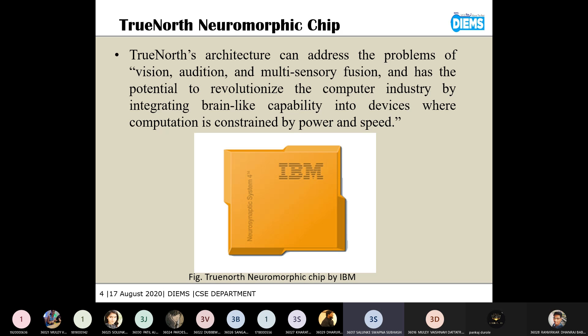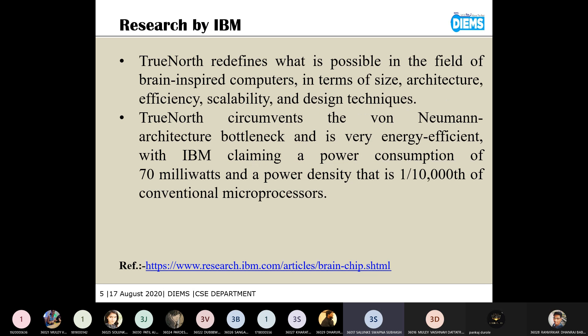Even if the data has some noise, that can also be processed very efficiently by this chip. This chip can be used for vision, or we can say it can detect audio and convert that audio into spike signals, and it can process those signals also. This is the reference from the official IBM site where they have given information about the TrueNorth chip and how efficiently this chip can help artificial intelligence in further development.